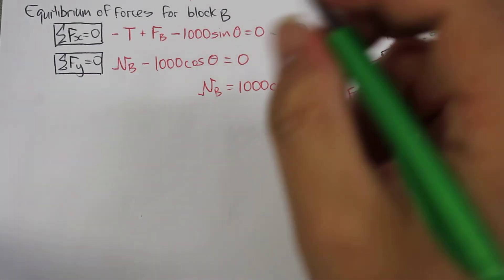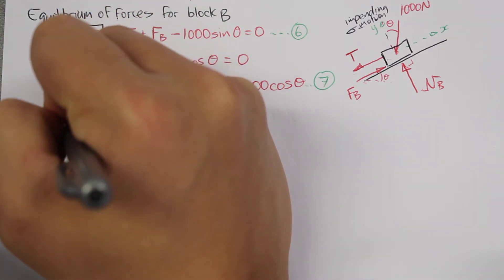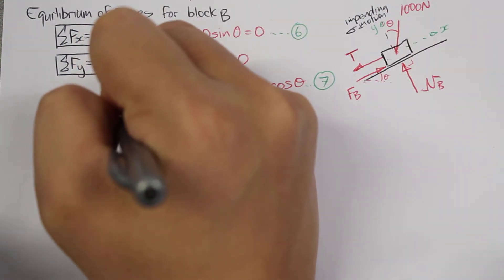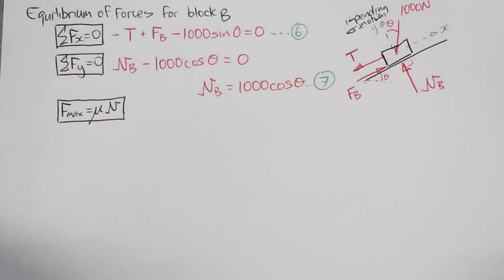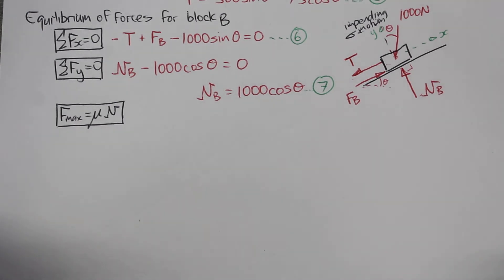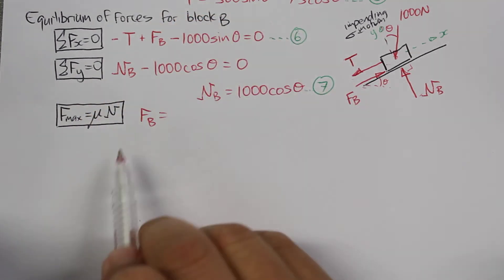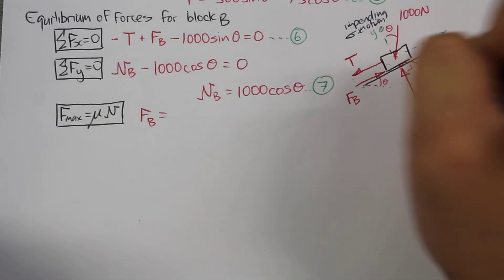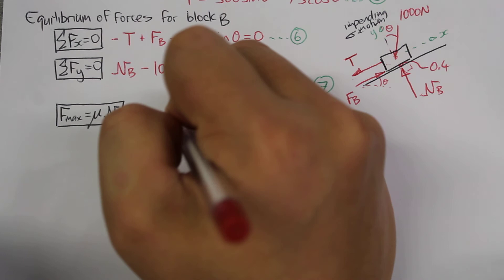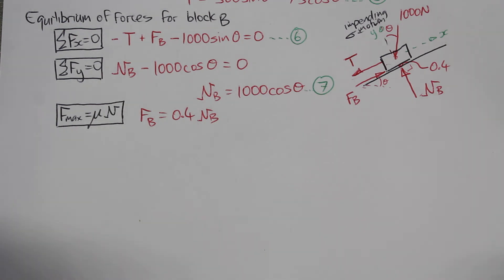We also have one more equation: the maximum friction force Fmax is equal to mu times N for that system. The maximum friction force for block B is FB_max equal to mu_B times NB. The coefficient of friction for block B is 0.4, so FB_max equals 0.4 times NB. We'll call that equation number eight.